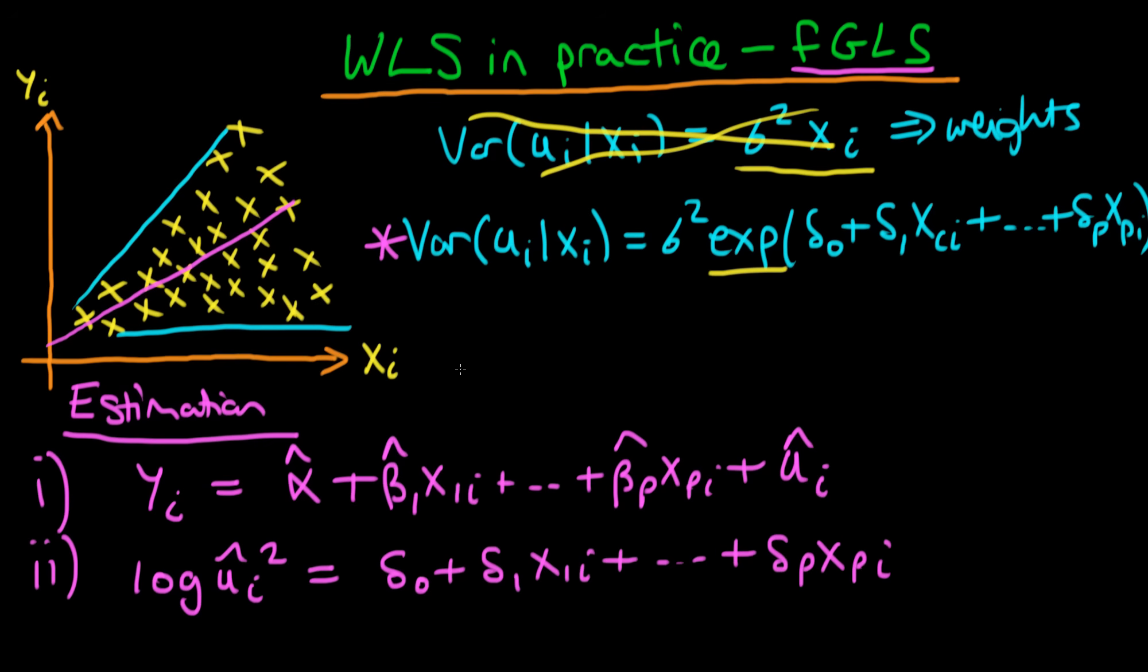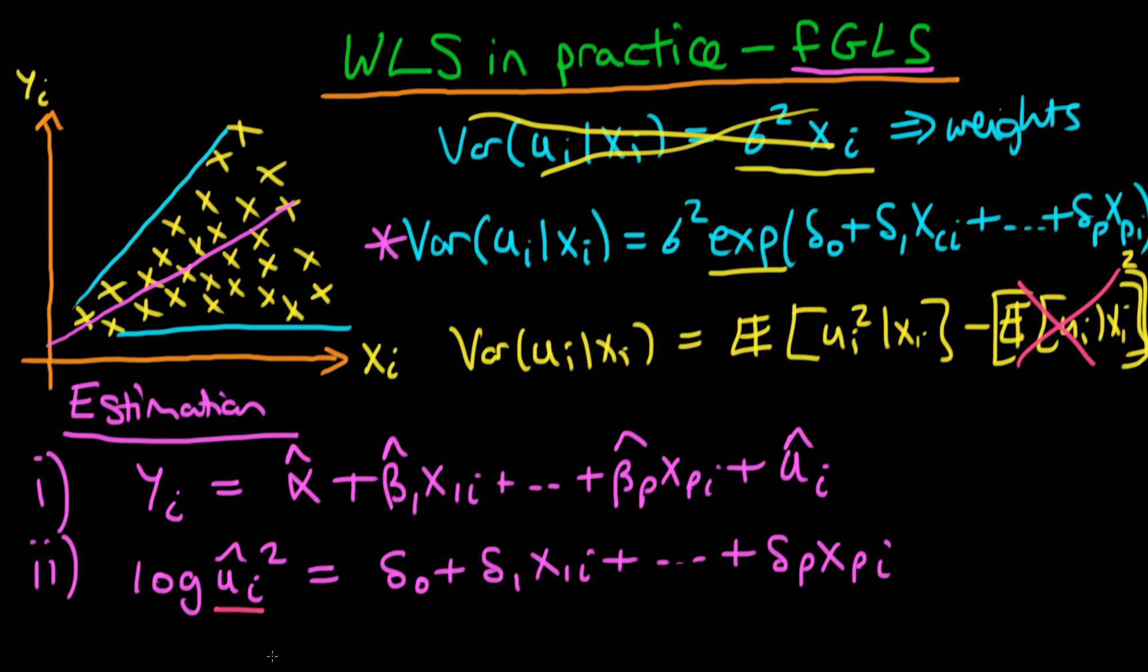Why have we used ui squared rather than just ui? It's because the variance of our error given xi is equal to the expectation of our error all squared given xi minus the expectation of ui given xi all squared. But we know that this second term here is zero under the assumption of the zero conditional mean of errors. So that's why our variance is given by at least the expectation of ui squared. That explains why we've got ui squared in this second regression.